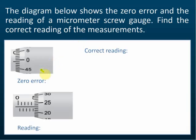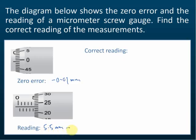They give you the zero error and the reading, and you must find the correct reading. The zero error is -0.01 mm. The micrometer screw gauge reading is 5.5 mm on the main scale plus 0.23 mm on the thimble scale, giving a reading of 5.73 mm.